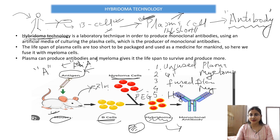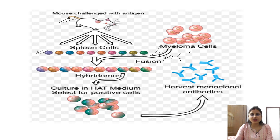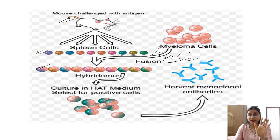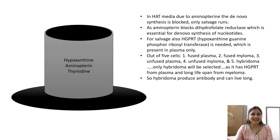To select hybridoma from the five kinds of cells, we use HAT media. Note this — it can be a question in your PG entrance examination: in which media is the fusion done? It is done in polyethylene glycol (PEG) media. Then we select the hybridoma using HAT media.